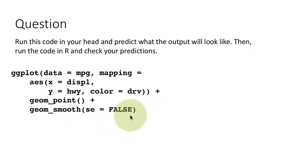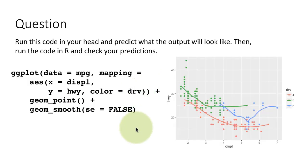Smooth layer has se equals false. So clearly the confidence interval gray band is not going to be there. But the color layer, since we have defined it at the ggplot level, the color layer will also apply to geom_smooth. So we won't have one line. Instead, we'll have three lines, one for each value of drive. So that's what it's going to look like.